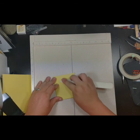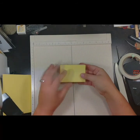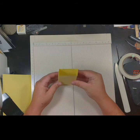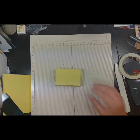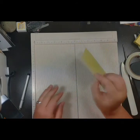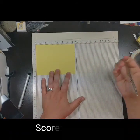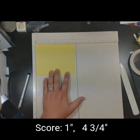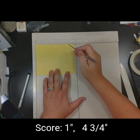Next, position the inner box piece horizontally with the longer side along the top. Score at one inch and four and three quarter inches.